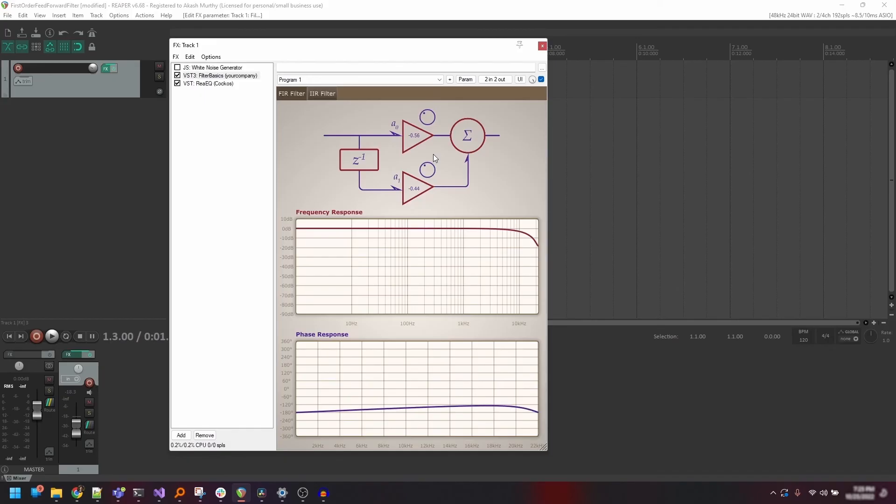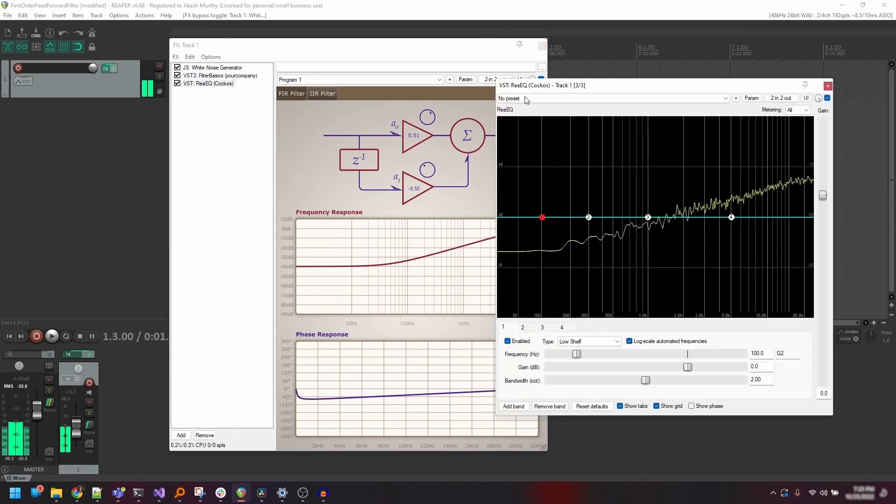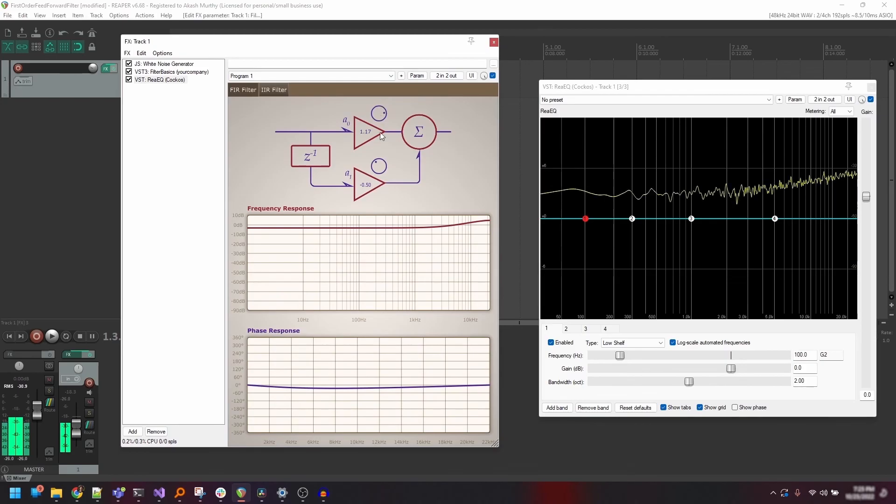When both the coefficients are either positive or when both are negative, the phase response is only going to be linear if the two coefficients are symmetric. When one of the coefficients is negative and the other positive, we get a high pass filter or a high shelf filter instead. We can add white noise through this track and hear the filter in action.